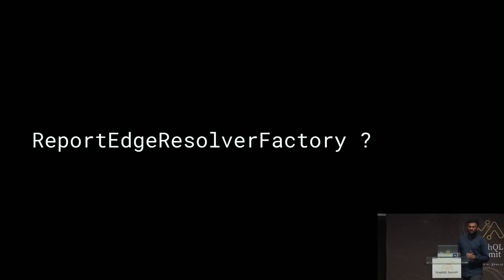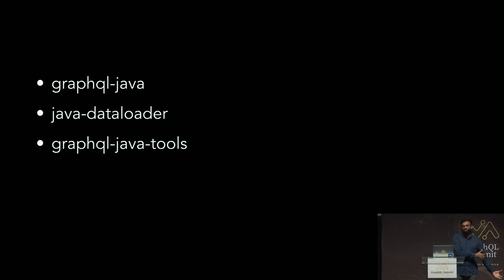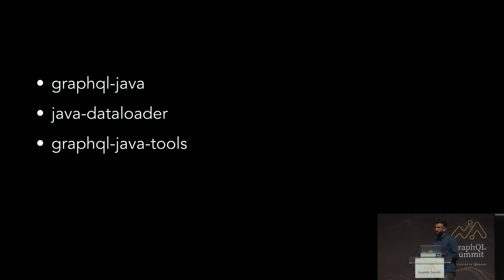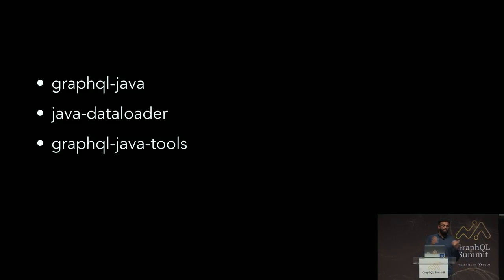Our API gateway uses Java, but that does not mean we are going to write report edge resolver factories — there are ways to do this in Java without having to write Java. As we started our journey, we looked at the tools available at that time, and we are probably the only people on stage who don't use Apollo. We took the GraphQL Java library, mostly because we want to write this GraphQL API alongside our existing REST API. We also used the Java implementation of Facebook's DataLoader to improve query efficiency. Eventually we moved to GraphQL Java Tools to eliminate some of the boilerplate we ended up writing.